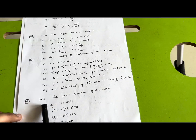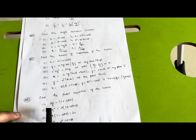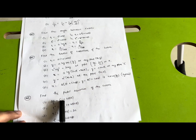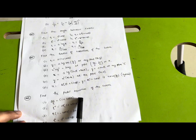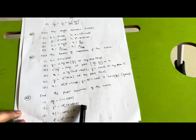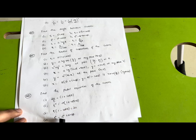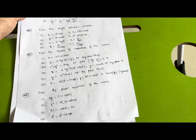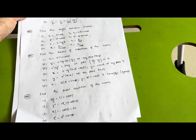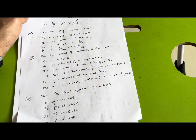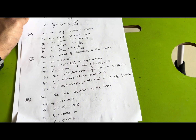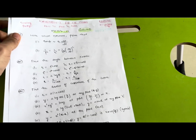Coming to the next concept — find the pedal equation of the curve. Important questions: 2a/r = 1 + cosθ, rⁿ = aⁿ(1 + cos(nθ)), r(1 − cosθ) = 2a, and rⁿ = aⁿ cos(nθ). In order to pass the Mathematics subject, you have to surely conquer 20 marks from Module 1 itself.